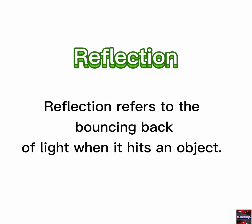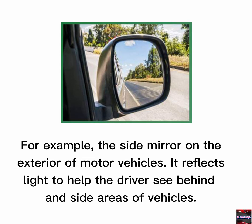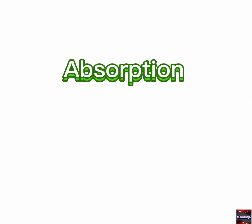Reflection. Reflection refers to the bouncing back of light when it hits an object. Some objects with flat surfaces, like mirrors, reflect light in a straight, predictable way. For example, the side mirror on the exterior of motor vehicles reflects light to help the driver see behind and side areas of vehicles. Some objects with uneven surfaces, like rocks, reflect light in a scattered way.